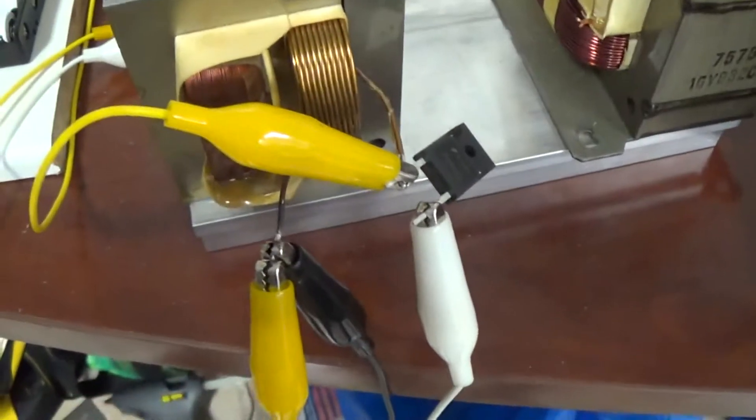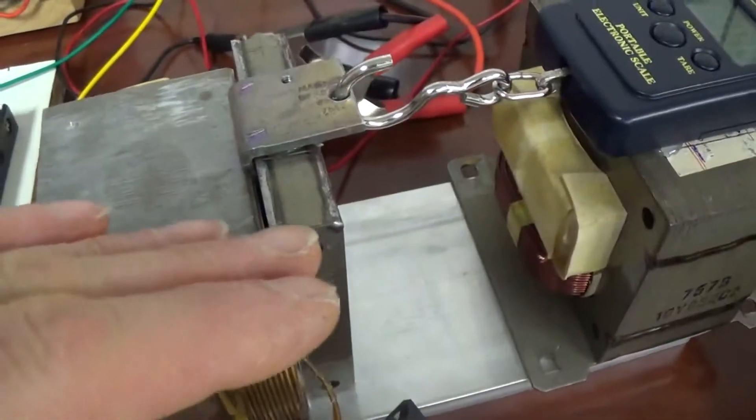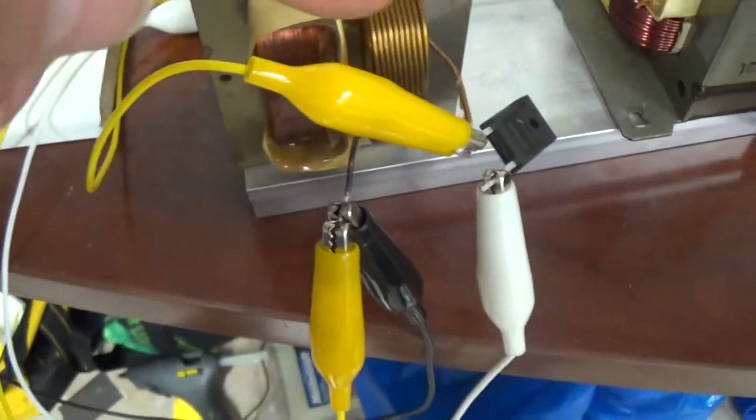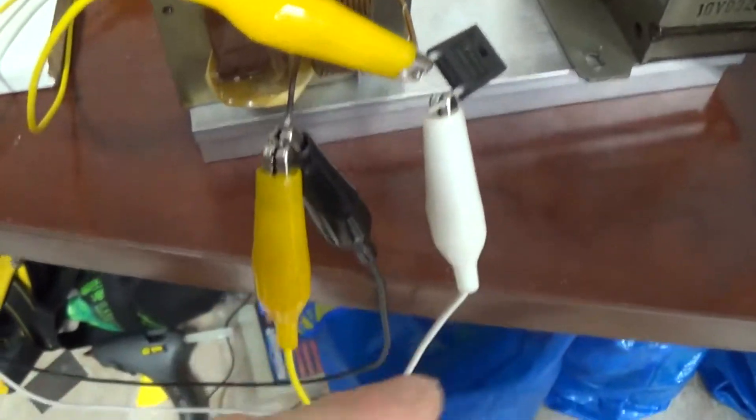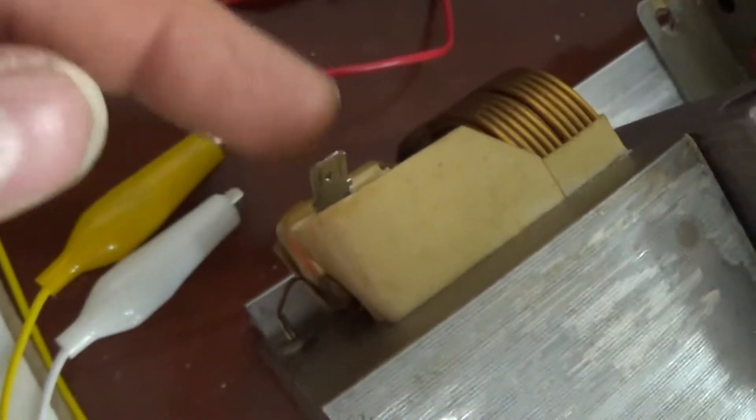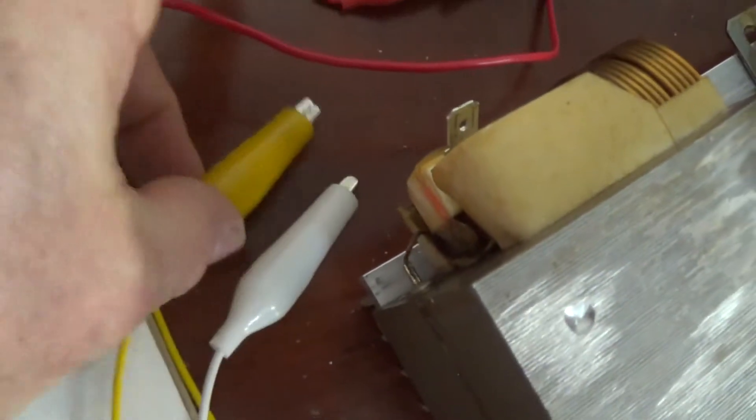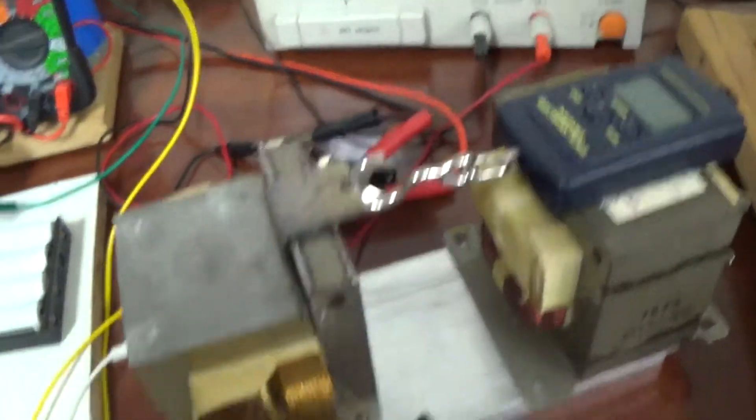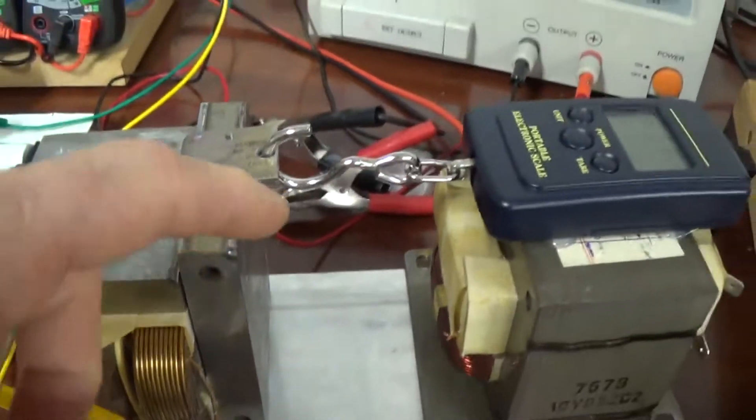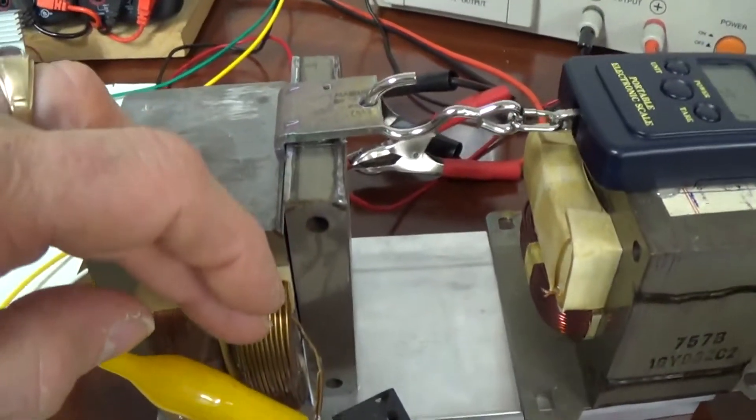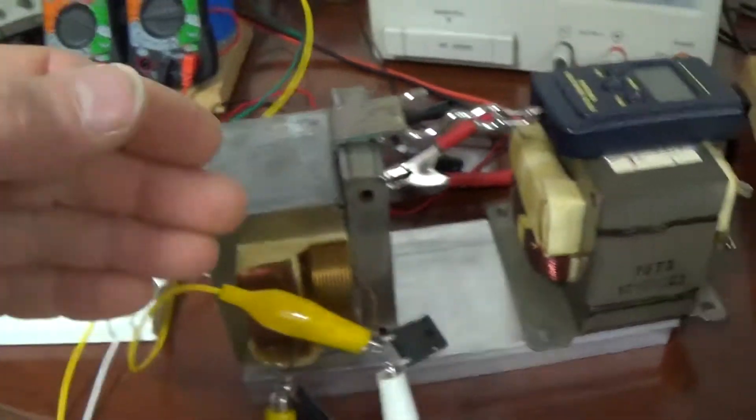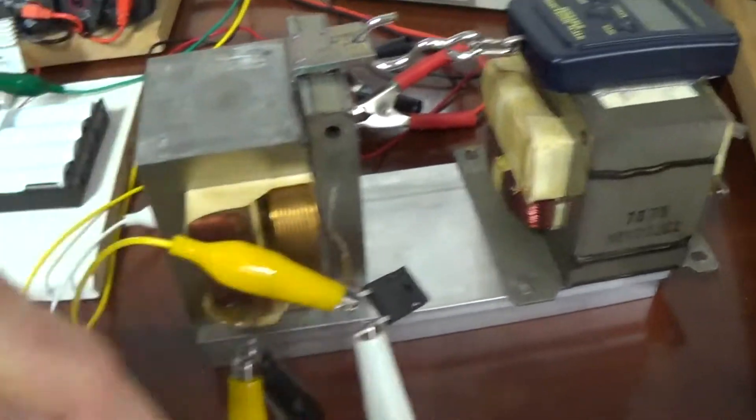First we're going to test the force of the magnetic field with just the primary here of this microwave oven transformer. Then we're going to connect - we have this diode here and this lead that will connect the secondary, the high voltage coil with these two leads, these two wires here. That will be the next test. So first we'll establish a baseline magnetic field strength of just this inductor. Then we're going to try it with the high voltage coil through the flyback of this inductor into this one.